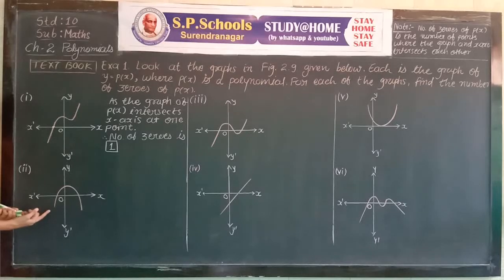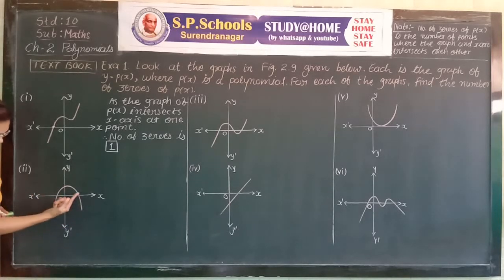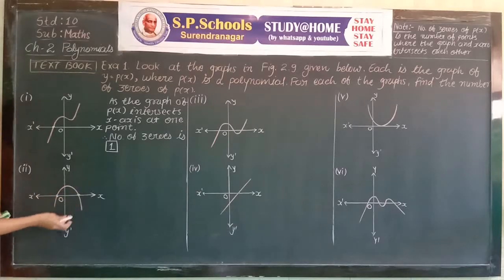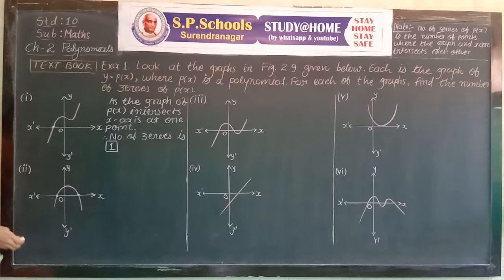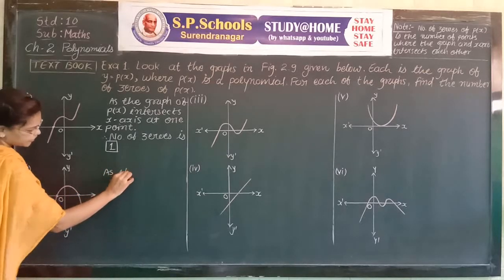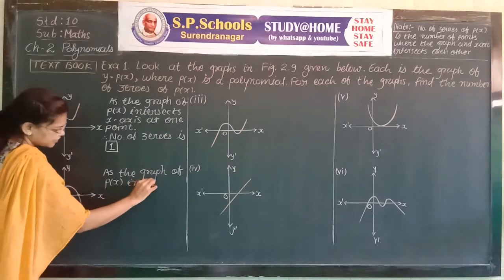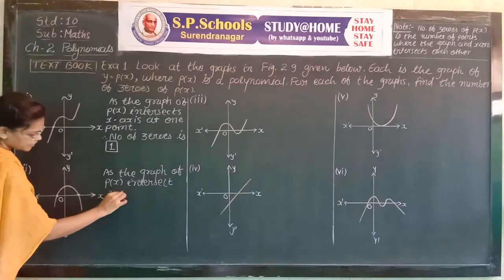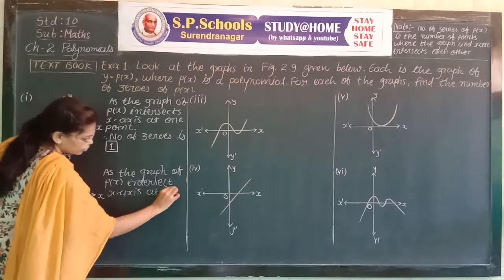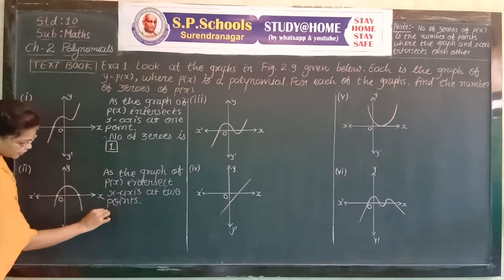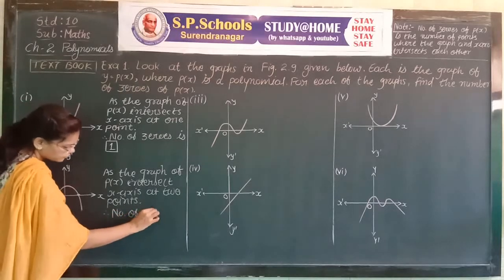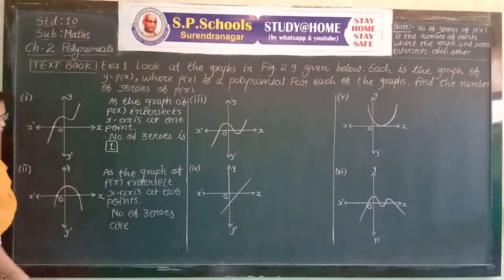This curve represents a quadratic polynomial, because this curve is known as a parabola. The curve and x-axis intersect each other at two points. The graph of the polynomial intersects the x-axis at two points. That's why the number of zeros are two. As the graph of P(x) intersects the x-axis at two points, therefore the number of zeroes are two.